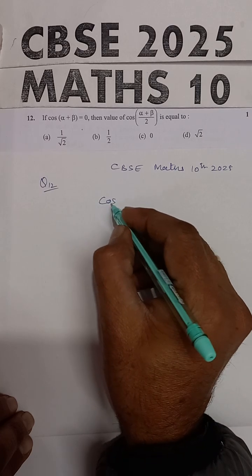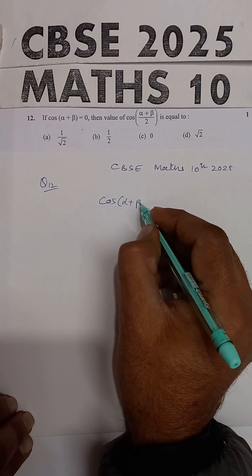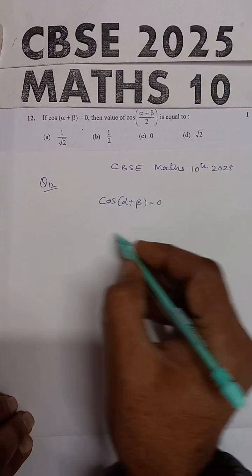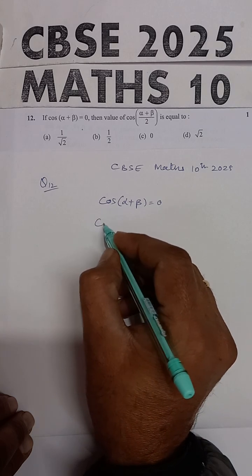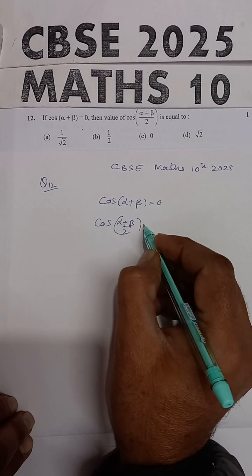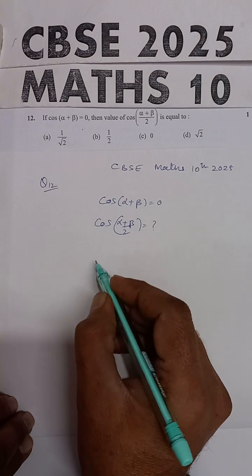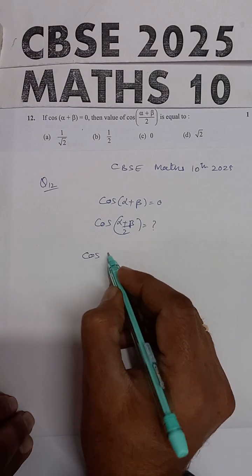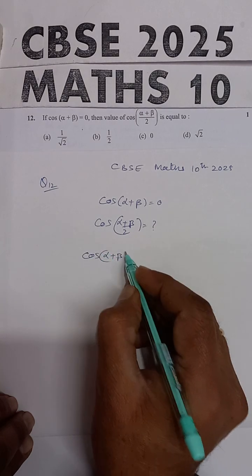if cos alpha plus beta, cos of alpha plus beta is equal to 0, then you have to find out the value of cos alpha plus beta upon 2. Now in this problem, cos of alpha plus beta is equal to 0.